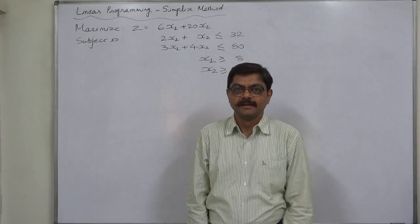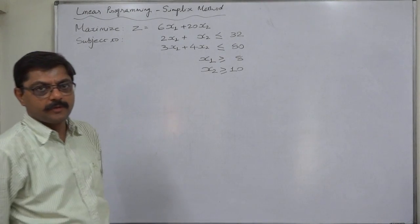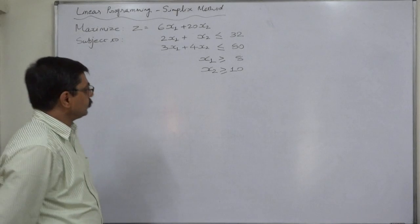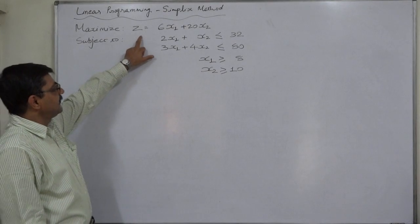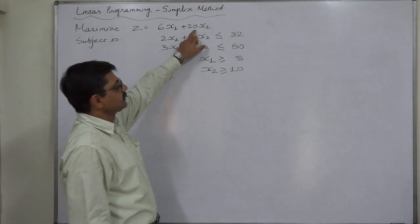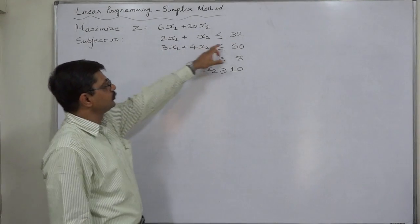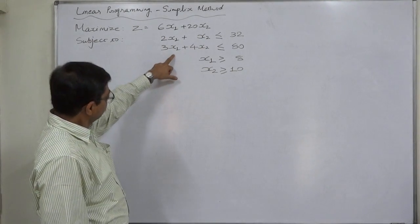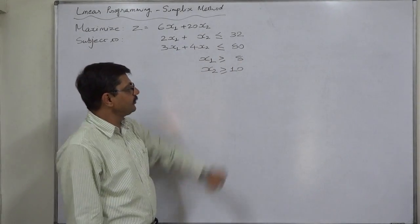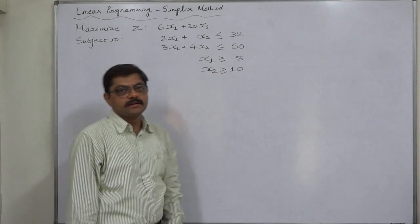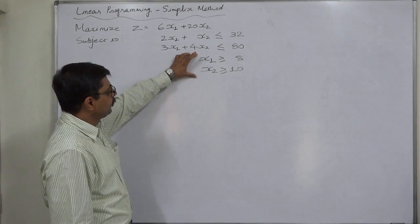Hello friends, welcome. We are going to take another case of linear programming which we are going to solve by the simplex method. The problem is: maximize z = 6x₁ + 20x₂, subject to the constraints 2x₁ + x₂ ≤ 32, 3x₁ + 4x₂ ≤ 80, x₁ ≥ 8, and x₂ ≥ 10.